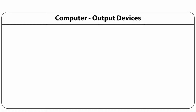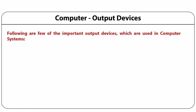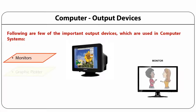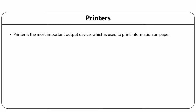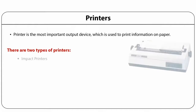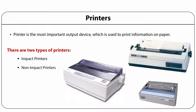Coming to the output devices, some of the important output devices used in computer systems are monitors, graphic plotters and printers. When you talk about printers, there are two important types: impact printers and non-impact printers.